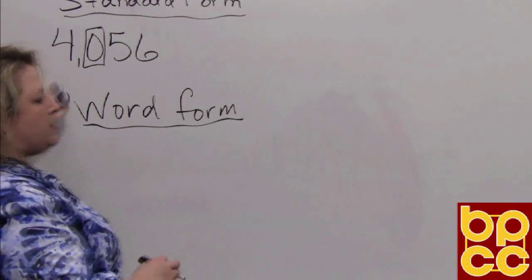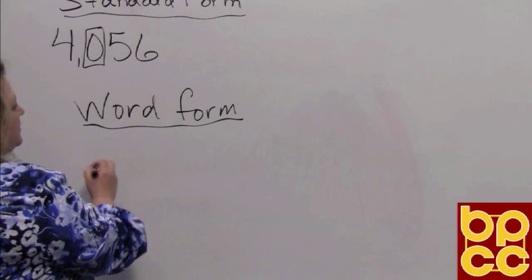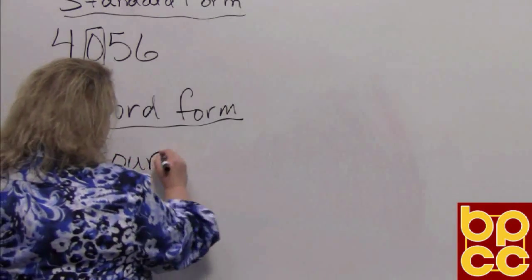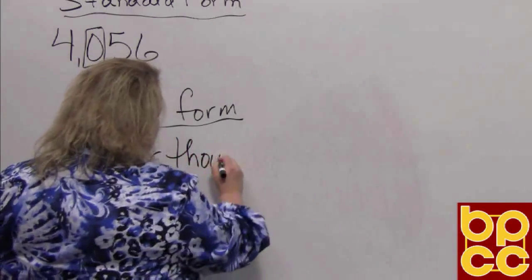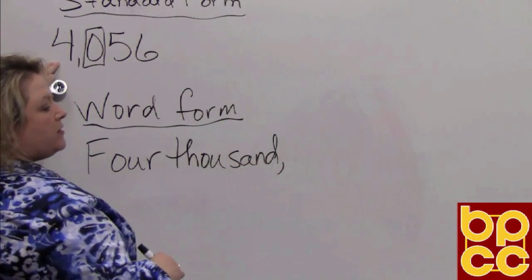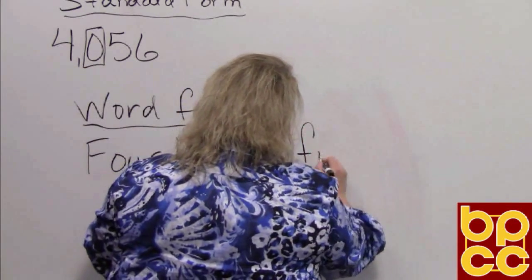This is 4056 written in standard form and we are going to write this now in word form. This would be four thousand because the four is in the one thousands place, then our comma, fifty-six.